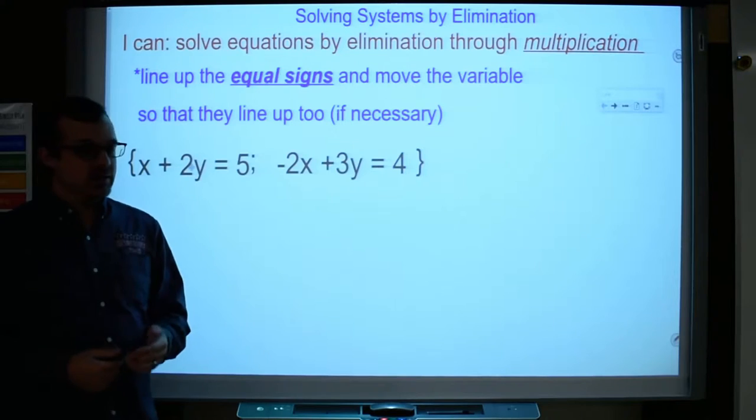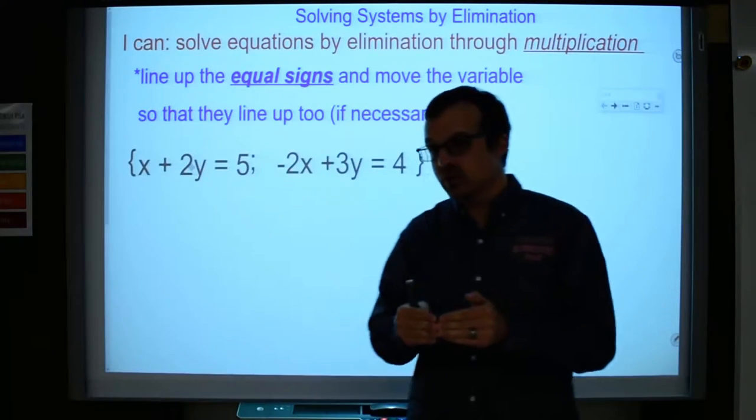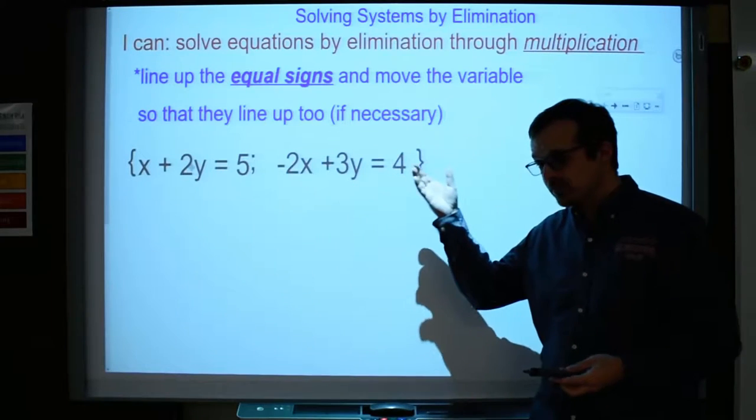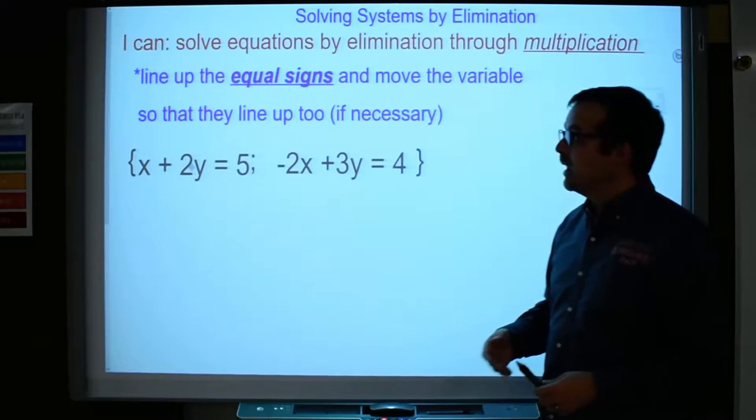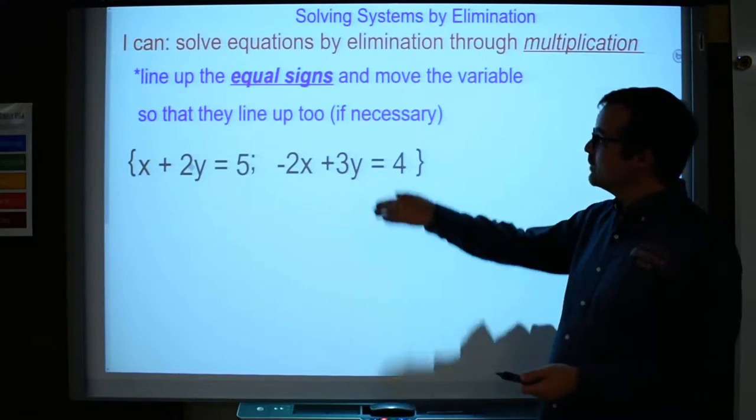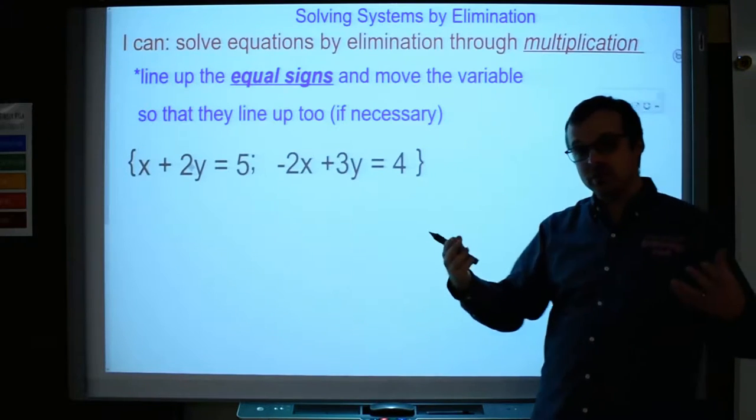However, that's not always going to be the case, so we want to give you guys another route around the mountain to the same kind of solution, the same target, which is a different method of getting there. So let me show you how this works. Just like we have been, we're still going to line up the equal signs, but we're also going to have to line up our variables.